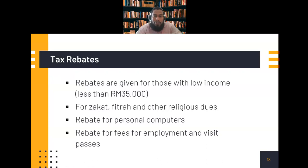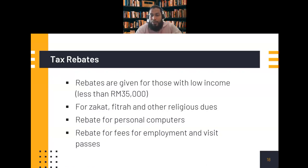Examples of tax relief include personal retirement savings up to RM3,000, insurance premium payments up to RM7,000, and purchasing books or paying for internet. Tax rebates examples include: if someone's salary is below RM35,000, they do not need to pay tax at all. If someone pays zakat, fitrah, or other religious dues, this amount is deducted from the tax — if the zakat amount equals the tax payable, no tax is owed. There are also rebates for personal computers and employment or visit pass fees for foreigners.